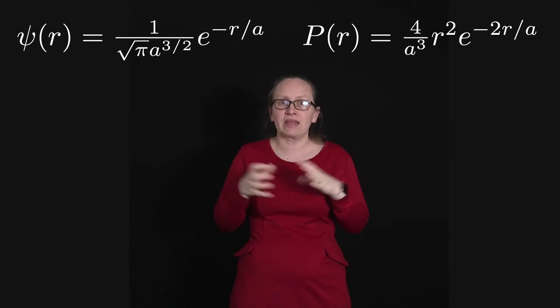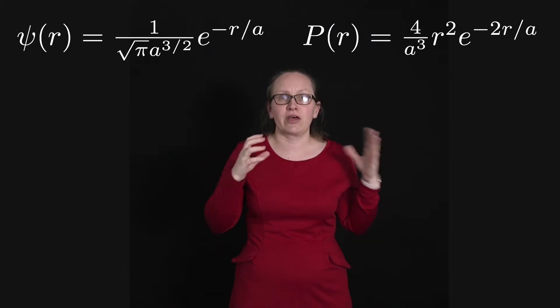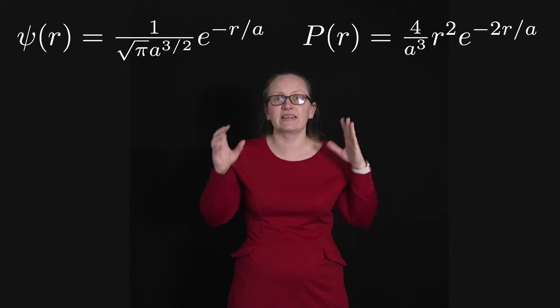So by squaring this wave function and accounting for the geometry, we can come up with a function that describes the probability of finding the electron at each radius as we move away from the nucleus.